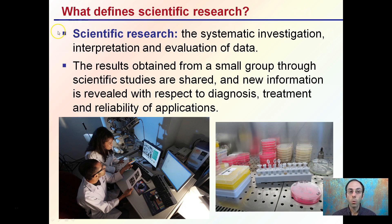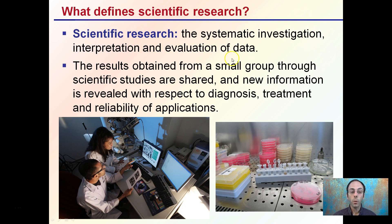First off, scientific research — what defines this? It's a systematic investigation, interpretation, and evaluation of data. The results obtained from a small group through scientific studies are shared and new information is revealed with respect to diagnosis, treatment, and reliability of applications. Scientific research doesn't mean it has to occur in a sterile lab. There are other scientific studies that can occur, but they all involve a systematic investigation — and the key part is the interpretation and evaluation of data.